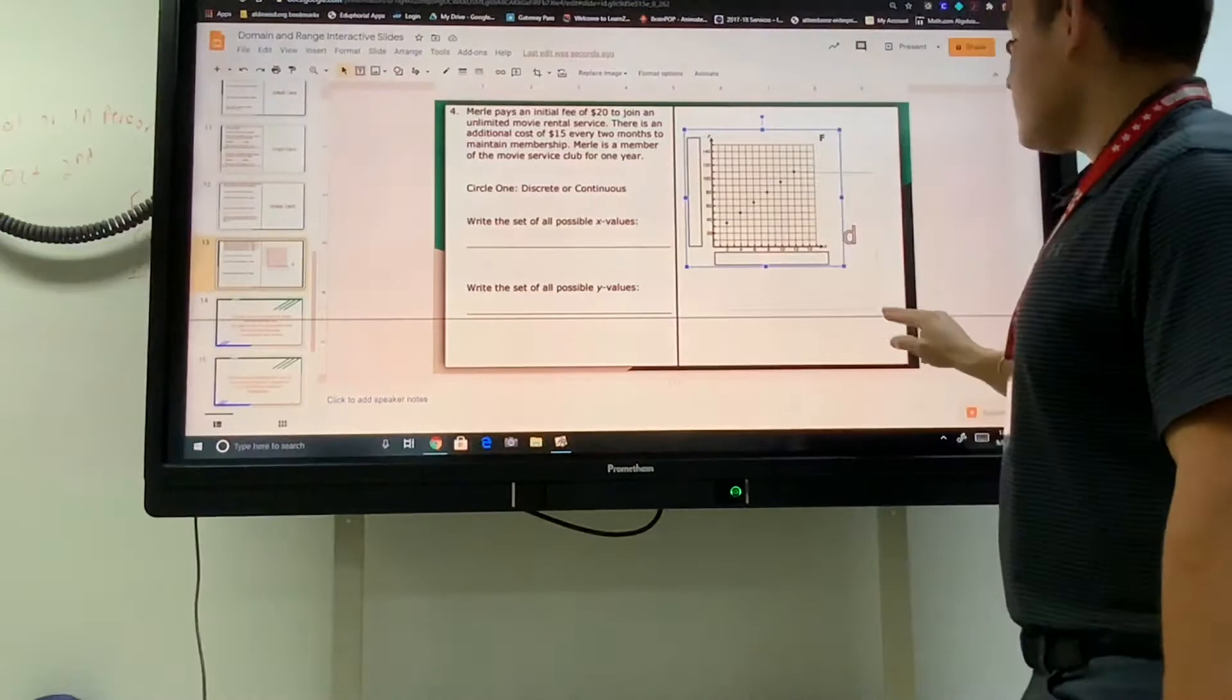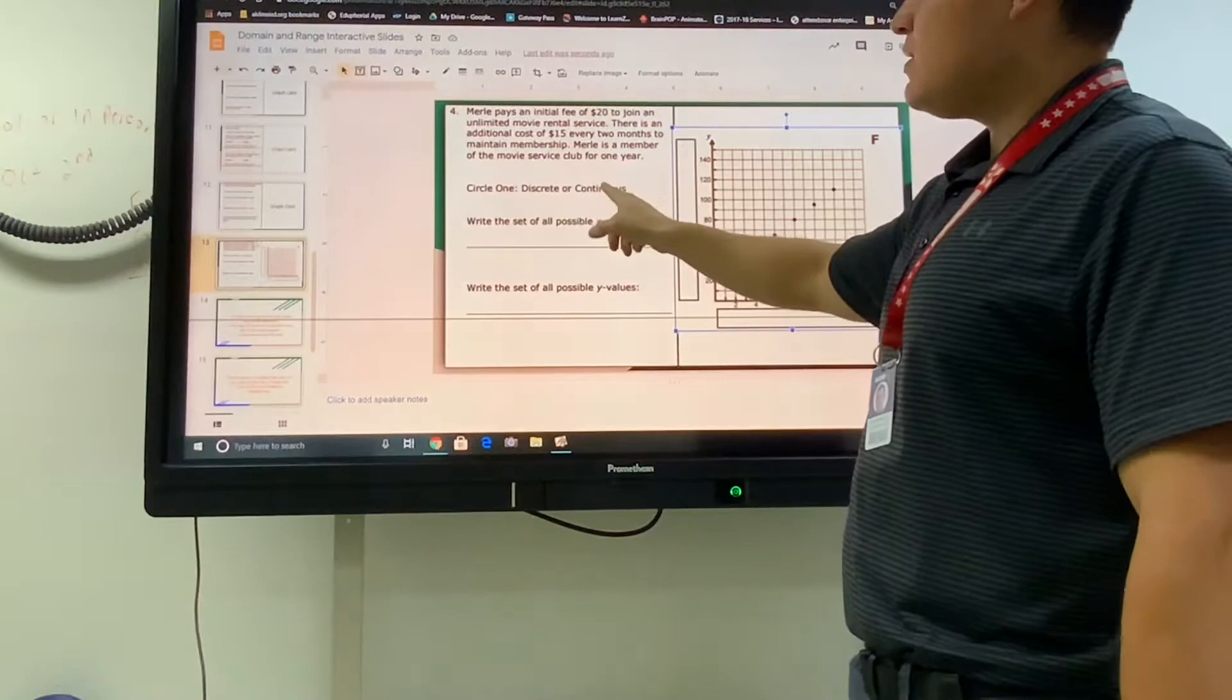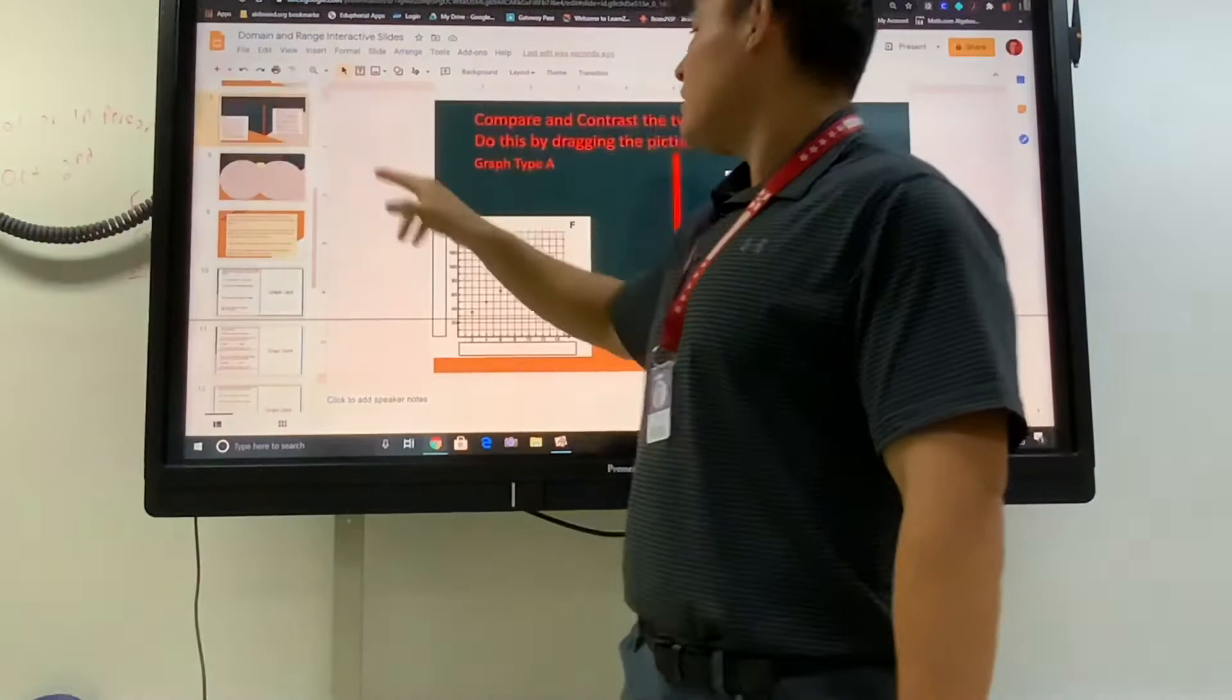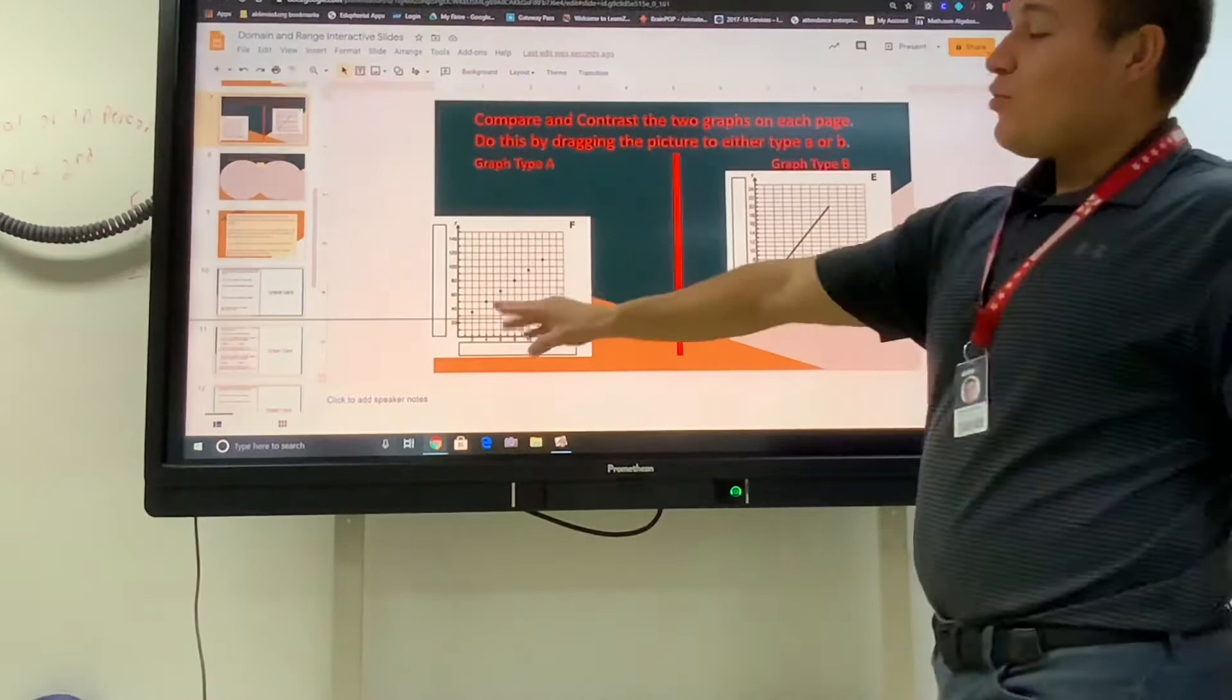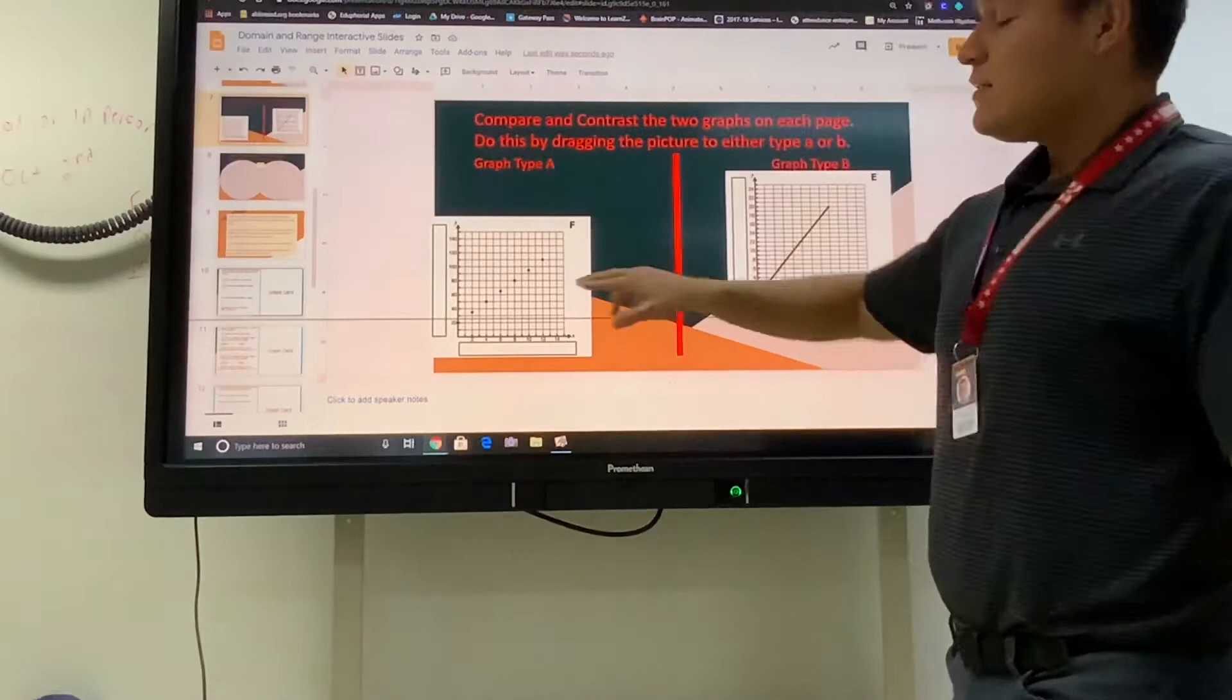This graph goes with number four. Was this graph discrete or continuous? If you've made it to this point, then you already did the compare and contrast. You already saw that some of these graphs had dots and some of them were continuous lines. If it was only a dotted graph, then we call that a discrete graph. If it was a continuous line, then that's a continuous graph.